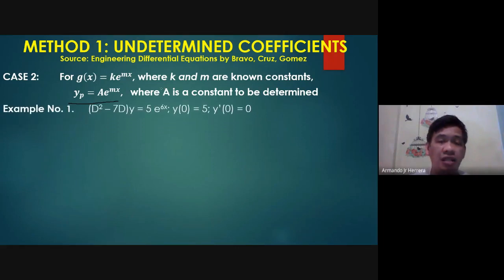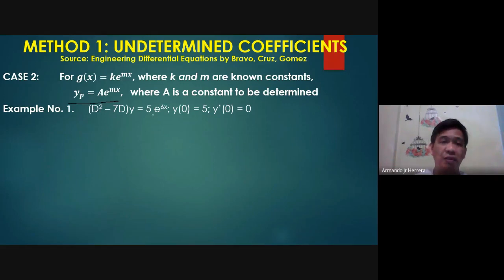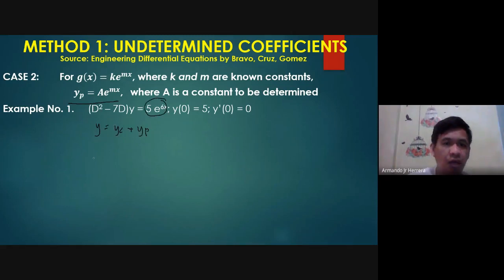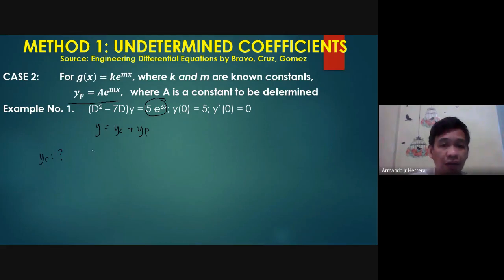Let us try this example. Given that D squared minus 7D times y is equal to 5e to the 6x. The general solution for a non-homogeneous LDE is y equals yc plus yp. So let's solve for yc first by solving the equation as if it were homogeneous.